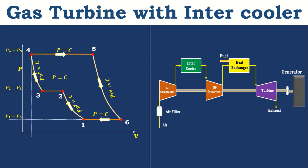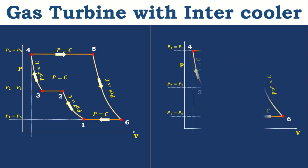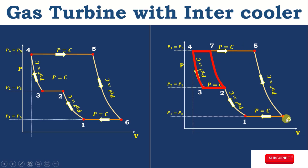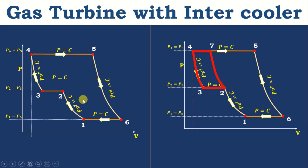Now we will discuss the difference between with intercooler and without intercooler. We know that this is the net work with intercooler of the gas turbine. In case it is without intercooler, you can see the area 1-7-5-6 is the work output without intercooler. This is the work output with intercooler. So under the PV diagram, you can see the work output is increased due to the intercooler — by reducing the compressor work input. This is the area of compressor work without intercooler, and this is the work given to the compressor with intercooler.